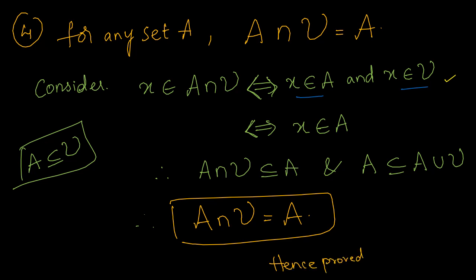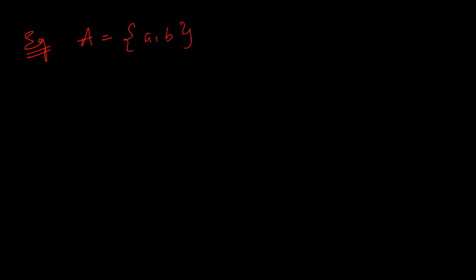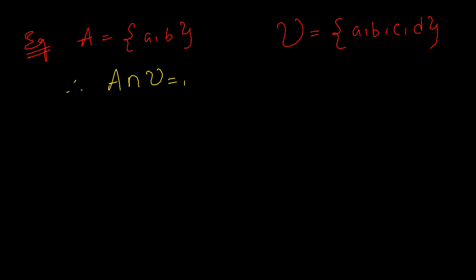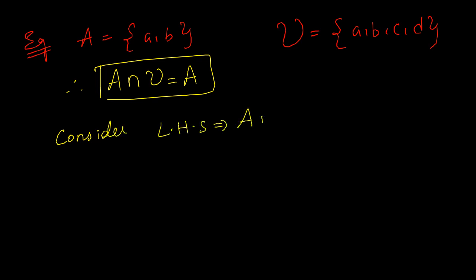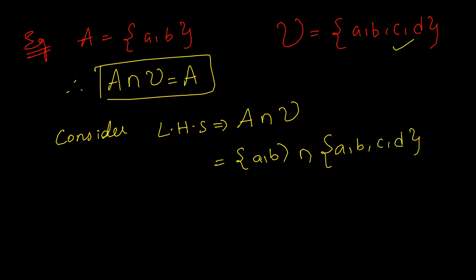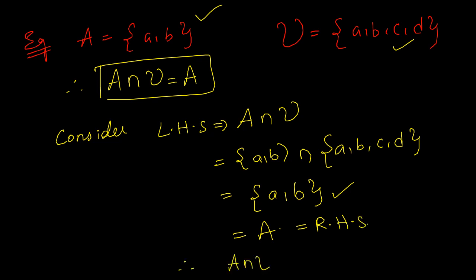Let us see an example for the fourth identity law. Let A = {a, b} and the universal set U = {a, b, c, d}. We need to prove A intersection U equals A. Taking the left hand side: A intersection U = {a, b} intersection {a, b, c, d}. Intersection means taking common elements — a and b are common. So the result is {a, b}, which is our original set A. Therefore A intersection U equals A. Hence proved.